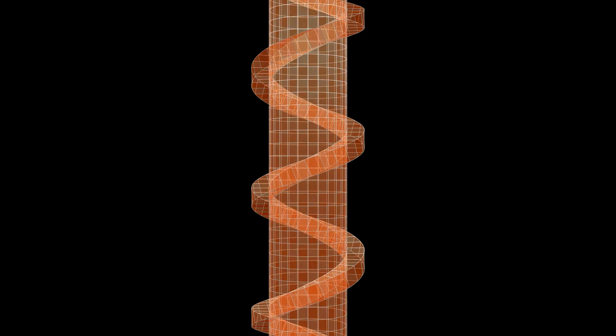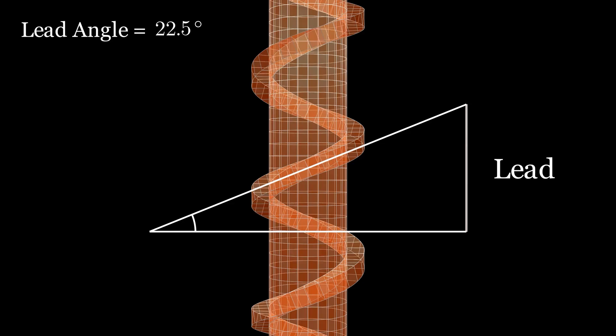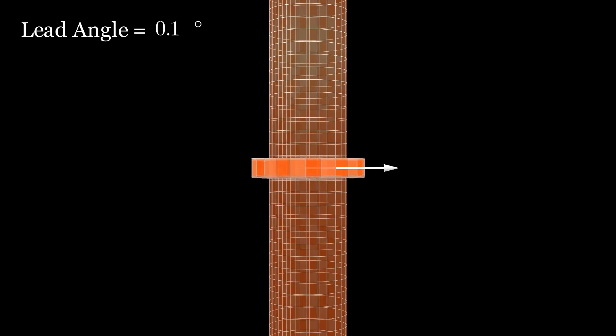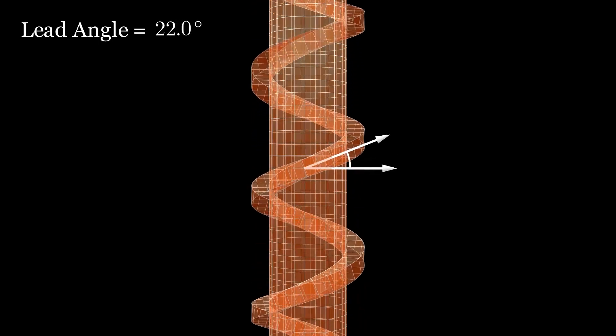A helix is just the hypotenuse of a right triangle wrapped around a cylinder of appropriate diameter. The angle at the base of this triangle is called the lead angle and the height of the triangle is called the lead. A lead angle of zero is equivalent to a revolute joint and a lead angle of 90 degrees is equivalent to a prismatic joint.